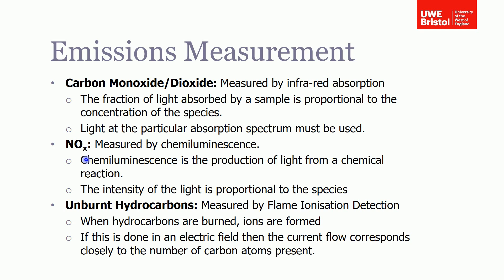Unburned hydrocarbons are measured by what's called flame ionization detection, or FID. The way this works is you pass your sample through a burner and as the hydrocarbons go through, they're burnt. As they're burnt, ions are formed. If you do this combustion in an electric field, then the current flow in that field corresponds to the amount of carbons present. So basically you're counting, from the current flow, the amount of carbons coming through your burner, and so you can get the concentration of unburned hydrocarbons.